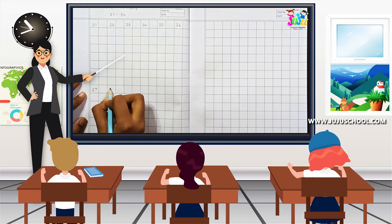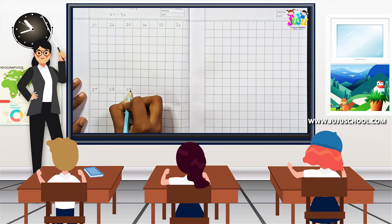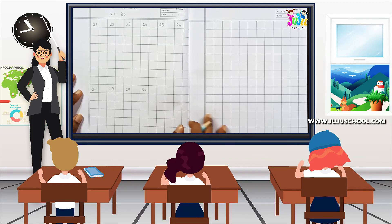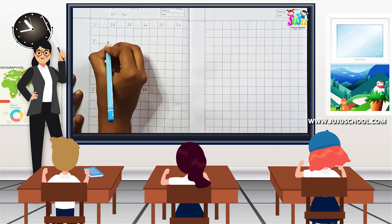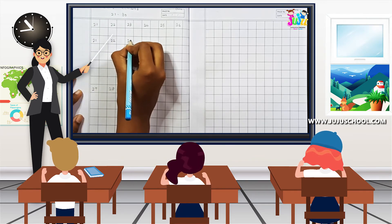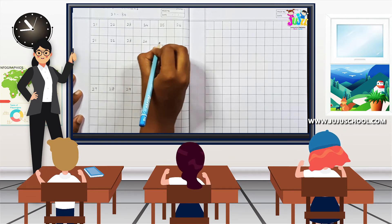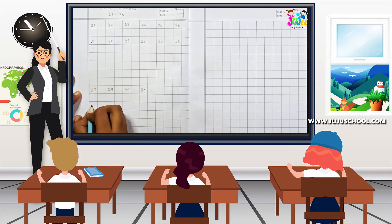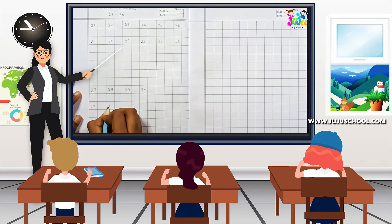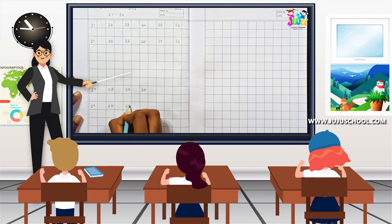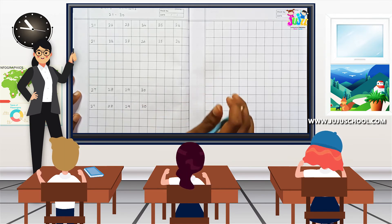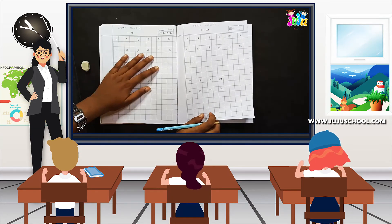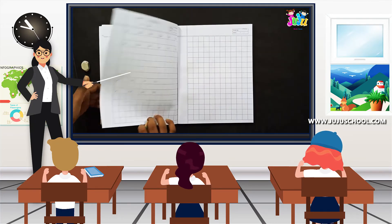27, 28, 29, 30. That's it. So now again we are going to continue. 21, 22, 23, 24, 25, 26, 27, 28, 29, 30. That's it. So we have completed writing part from 1 to 30.